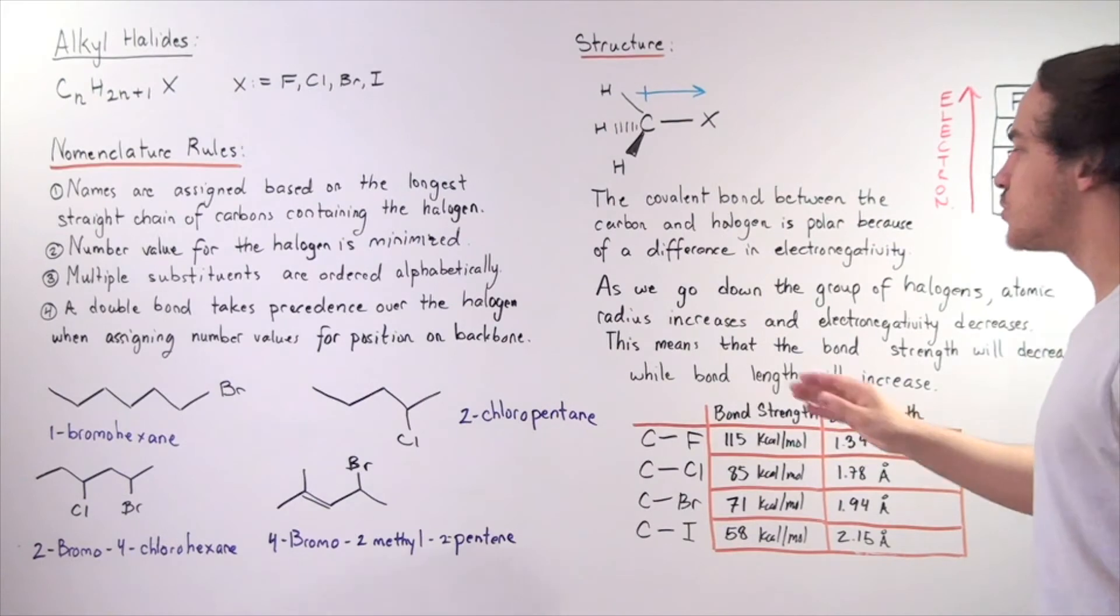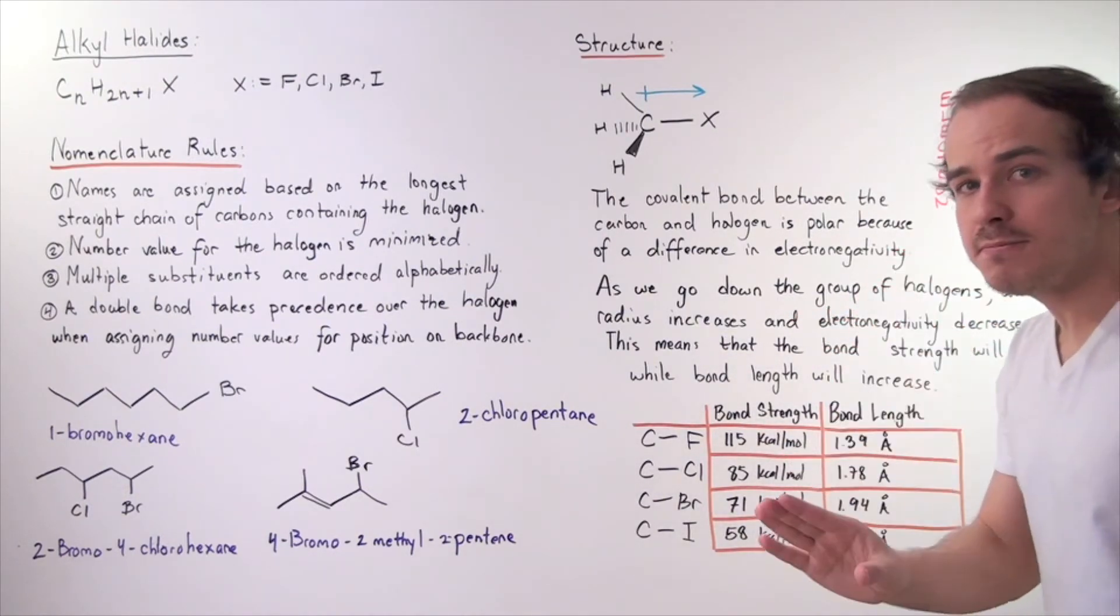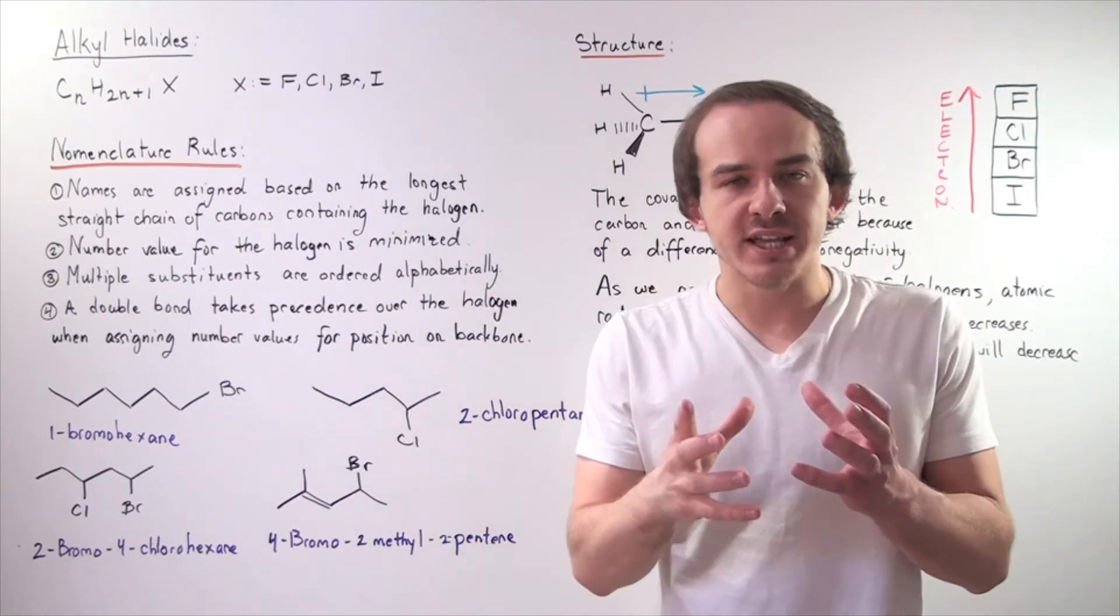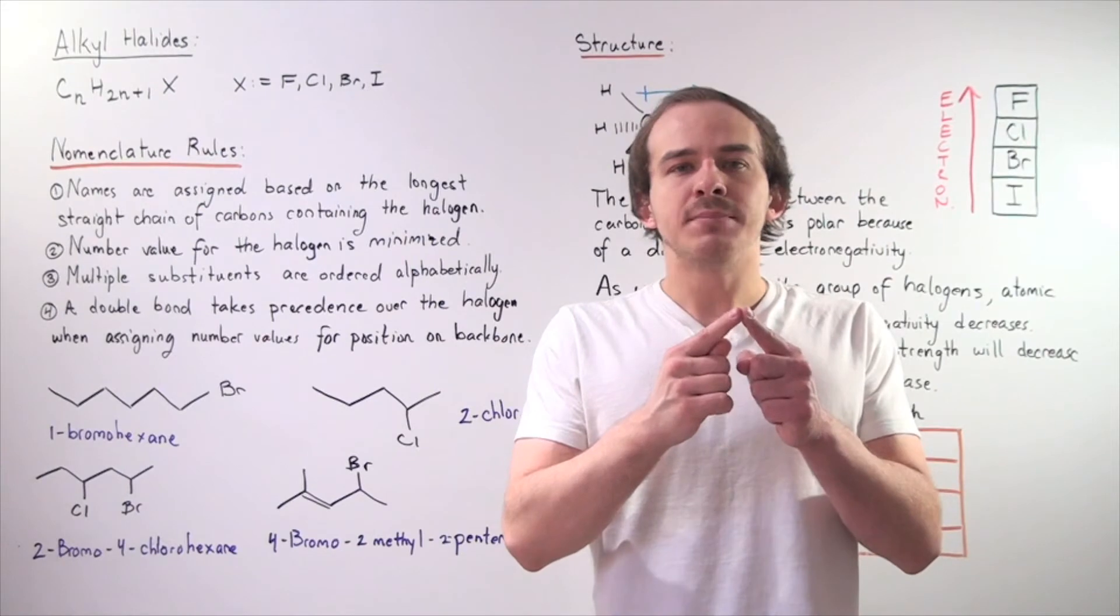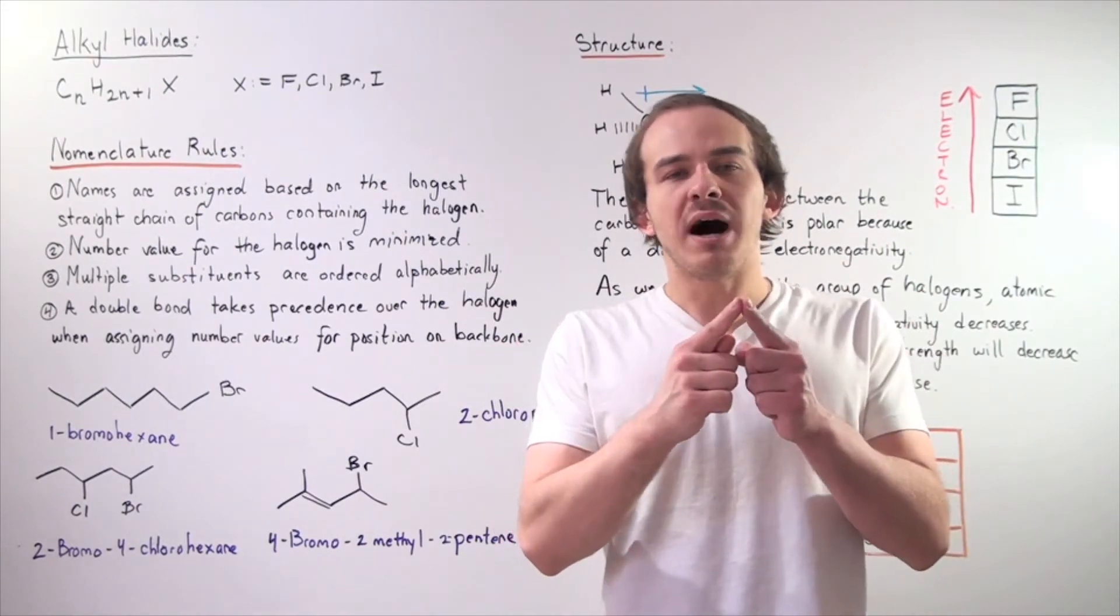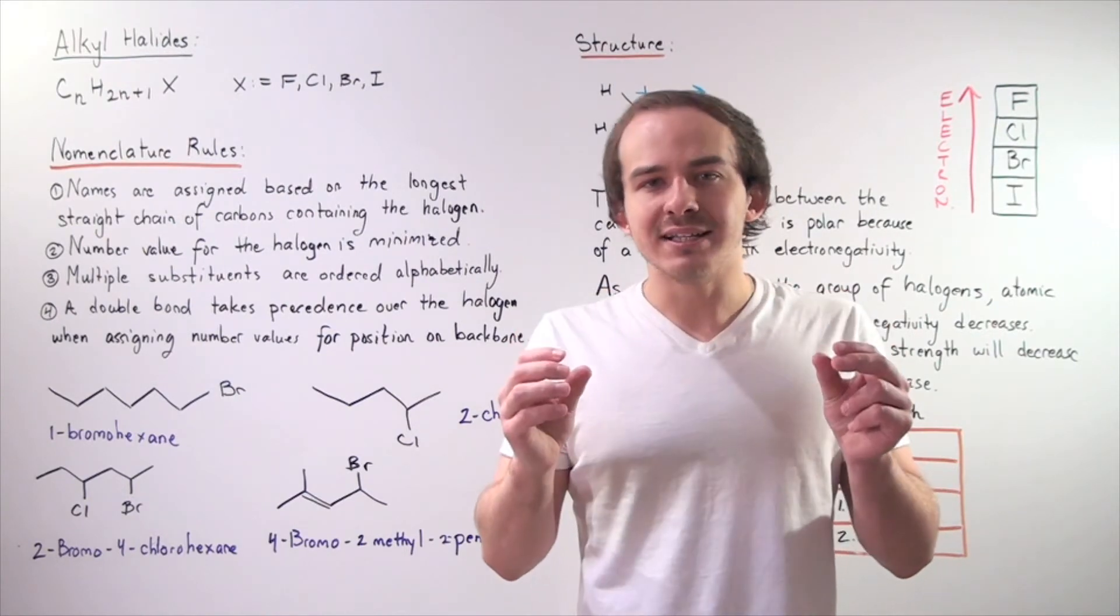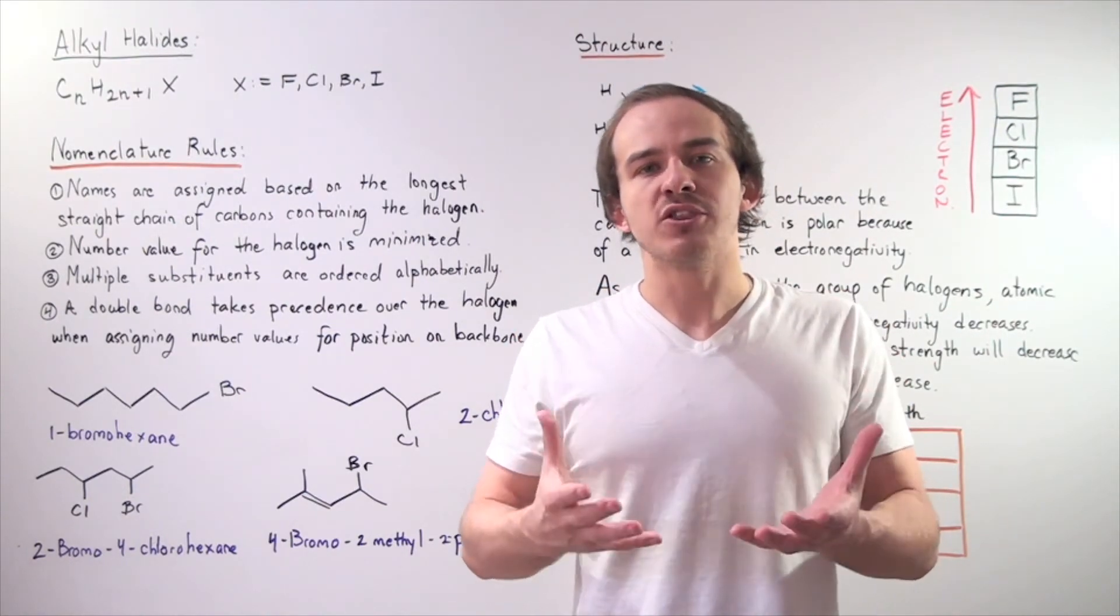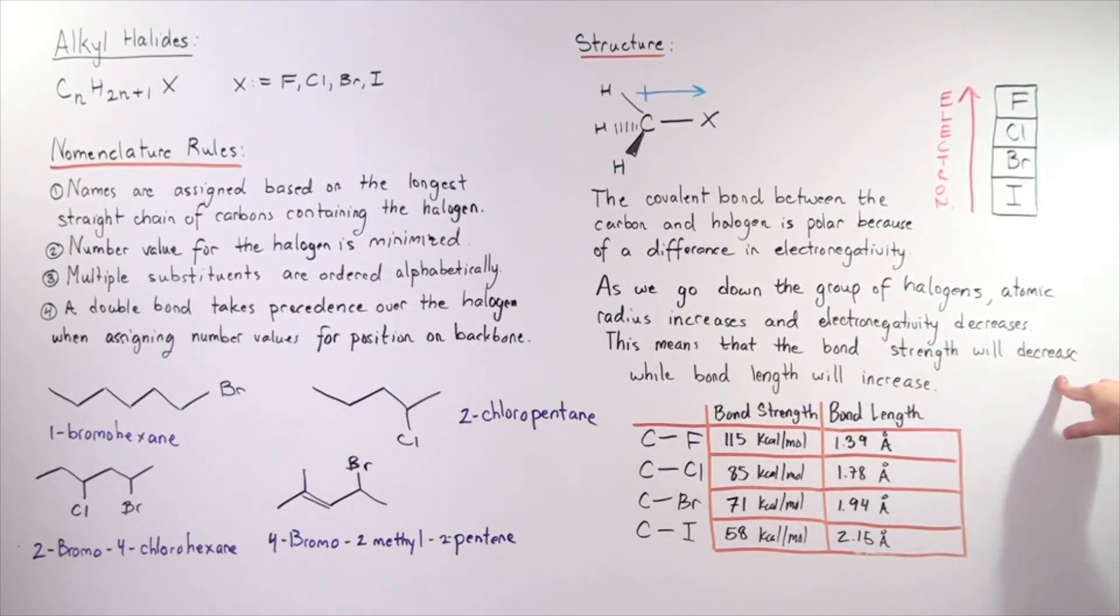The covalent bond between the carbon and the halogen is polar because of a difference in electronegativity between carbon and the halogen. As we go down the group of halogens, our atomic radius increases and electronegativity decreases. This means if our nucleus gets larger and less electronegative, the bond length will increase, and when electrons get further away in the bond, our bond strength will decrease. So bond strength will decrease while bond length will increase.